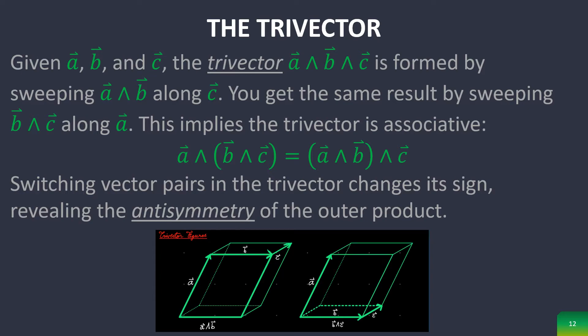Now, moving on to the trivector. Given vectors a, b, and c, the trivector a wedge b wedge c is formed by sweeping a wedge b along c. You get the same result, though, by sweeping b wedge c along a. The trivector is therefore associative. And hopefully, these pictures at the bottom provide a good visualization tool.